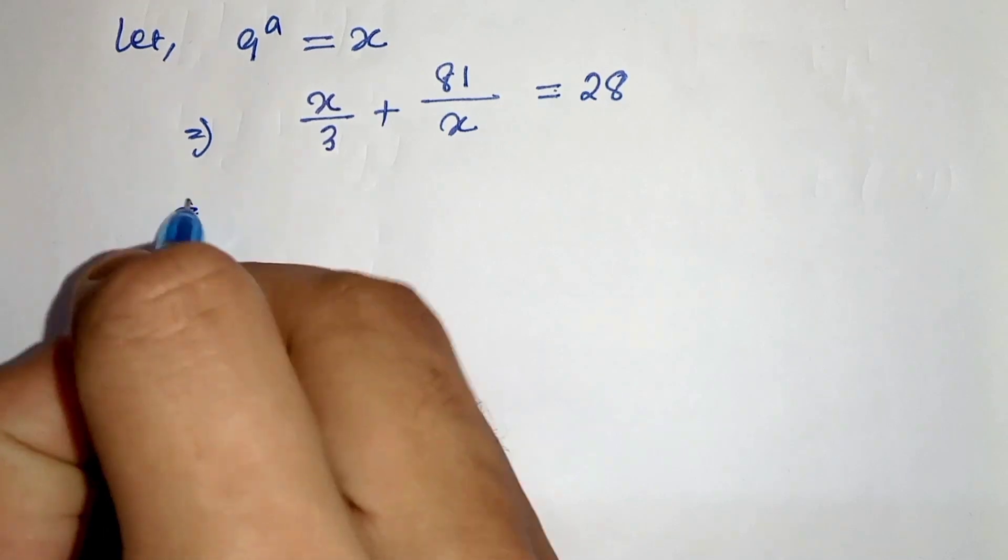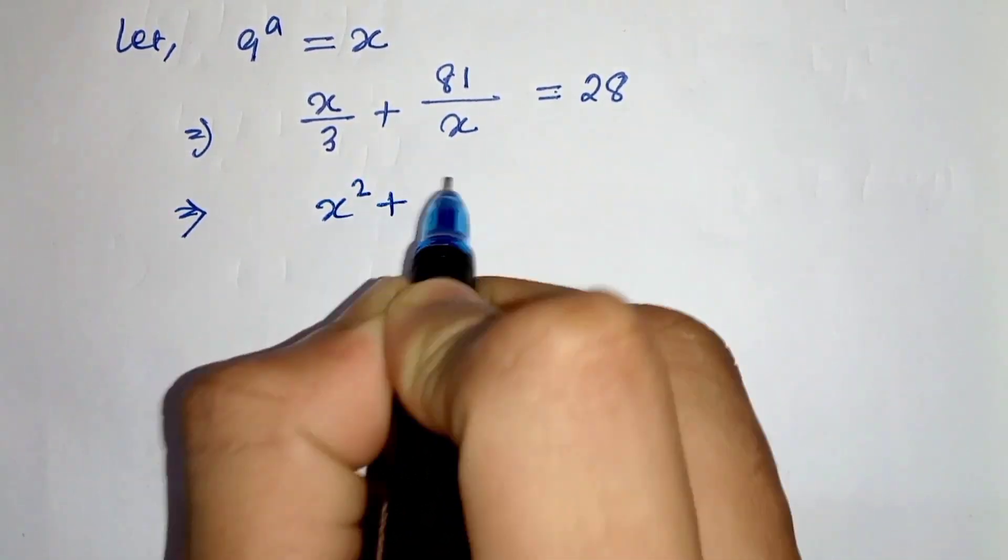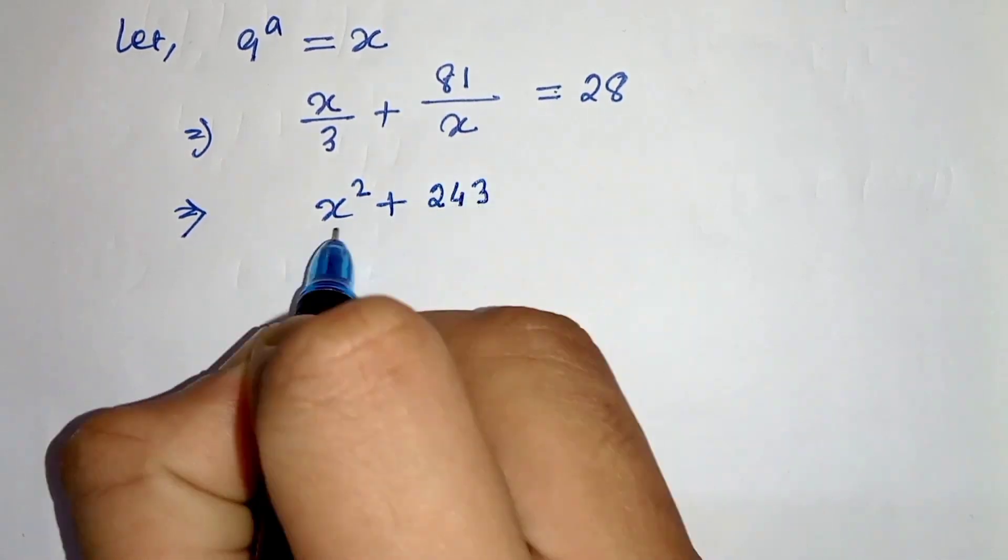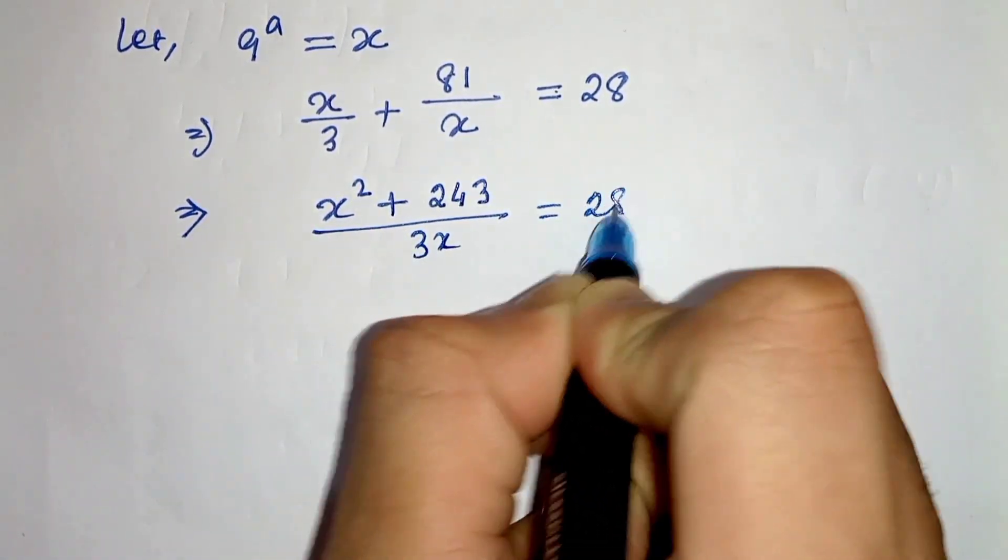Now we have to take the LCM so it will be x squared plus 81 times 3, which is 243, divided by 3x equals 28.